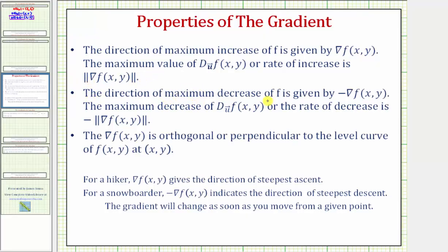The direction of maximum decrease of f is given by the opposite of the gradient of f. For a snowboarder, the opposite of the gradient of f indicates the direction of steepest descent. The maximum decrease of the directional derivative, or rate of decrease, is equal to the opposite of the magnitude of the gradient of f. Finally, the gradient of f is orthogonal or perpendicular to the level curve at the point x, y. It's also important to recognize that the gradient will change as soon as you move from a given point.